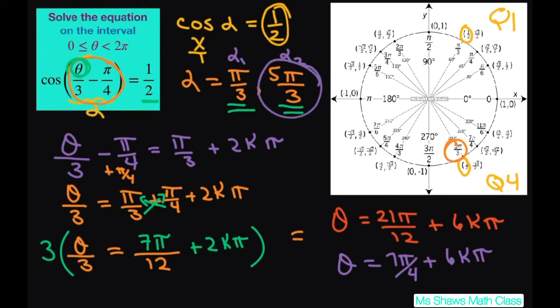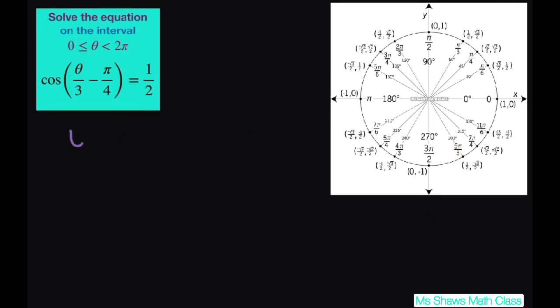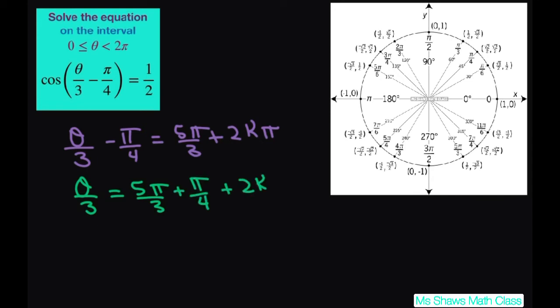So we're going to check this one out. That one's going to be theta divided by 3 minus π divided by 4 equals 5π divided by 3 plus 2kπ. So add π divided by 4 to both sides. So you get theta divided by 3 equals, with common denominator 12, that's 20π plus 3π which is 23π divided by 12 plus 2kπ.